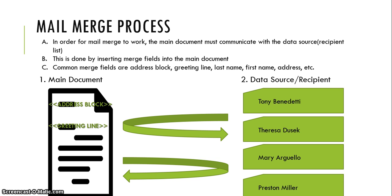The Mail Merge process works in this way. In order for Mail Merge to work, the main document must communicate with the data source. This is done by inserting merge fields into the main document. Common merge fields are address block, greeting line, last name, first name, address, and so on.